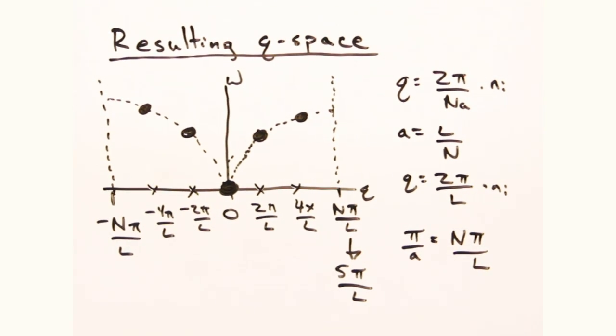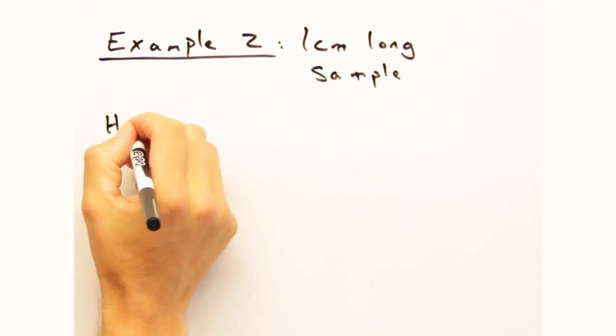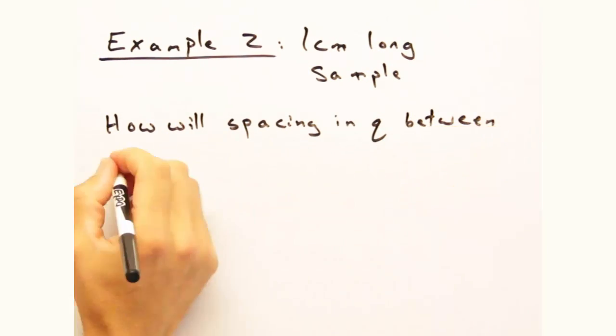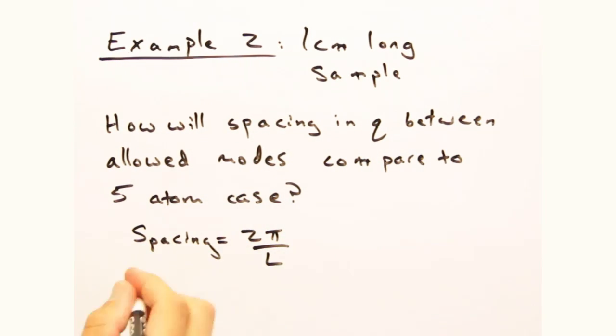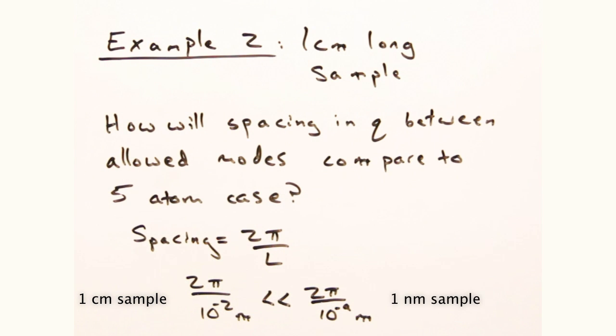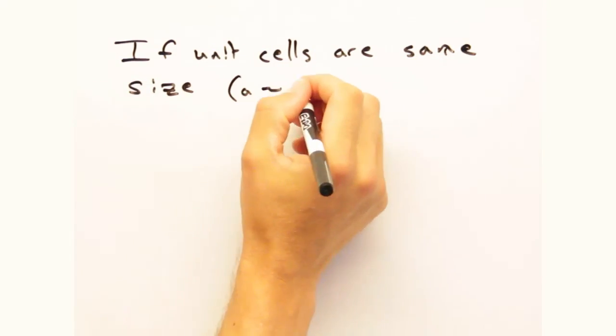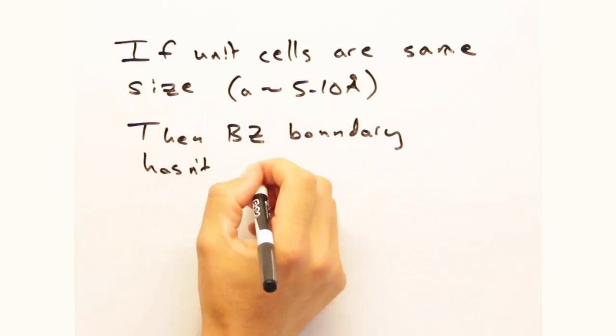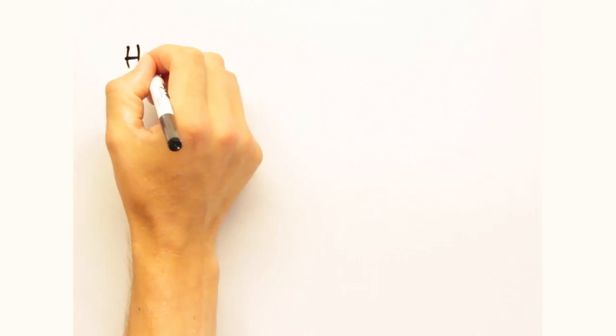Okay, so 5 atoms is probably a bit short. Let's consider a 1D sample that's one centimeter long. How would the spacing in Q between allowed modes compare to the 5 atom case? It would shrink considerably because of the inverse relationship with L. Exactly. And assuming our unit cell is the same size, our Brillouin zone also stays the same size. So because of the smaller spacing between modes, we have considerably more modes in the centimeter long sample.